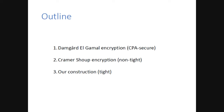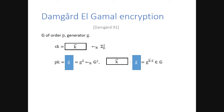I will give the construction in three steps. First, our starting point is a simple CPA secure encryption scheme known as Dam-Gård ElGamal. Then I'll show how to modify it slightly to get a simplified version of Cramer-Shoup encryption, which is non-tight. Finally, I'll show how to modify it again to get our construction, which is tight. Throughout this talk, I use white boxes to denote vectors of exponents over Z_p, and blue boxes—and later red boxes—to denote vectors of group elements.